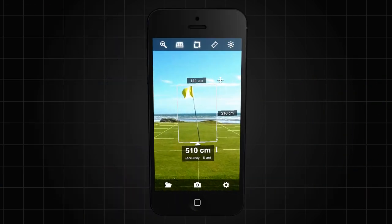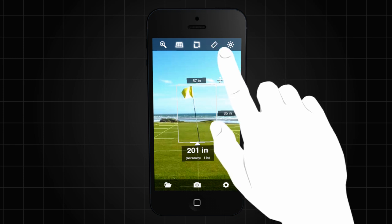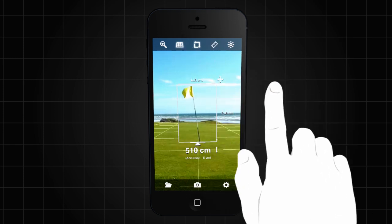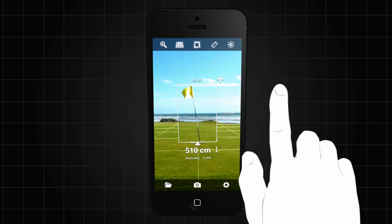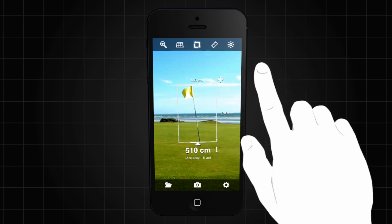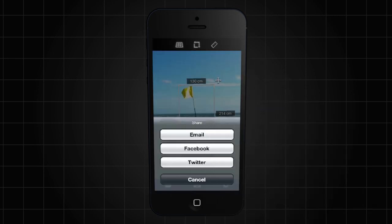As you're measuring, you can tap the on-screen icons to toggle the unit of measurement, to add or remove the text background, to add or remove the grid, or to snap a photo to share through Facebook, Twitter, or email.